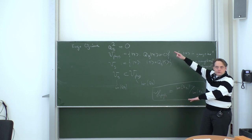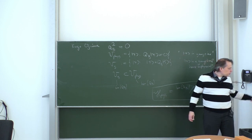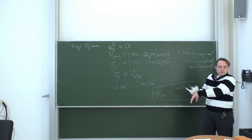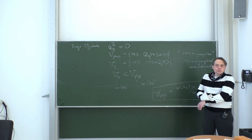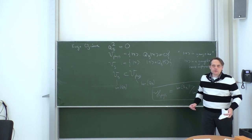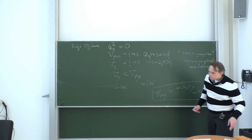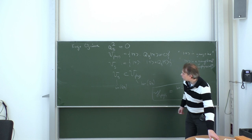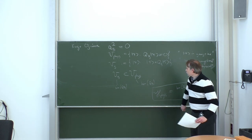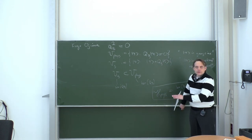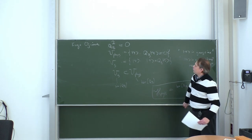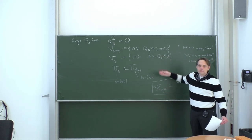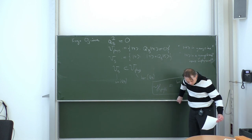This structure is a direct generalization of what we have in the abelian case, and it fully works in all gauge theories, including the most complicated non-abelian gauge theories. This is also a motivation behind the exercise that you should do, because you can re-express our current formalism in this way.